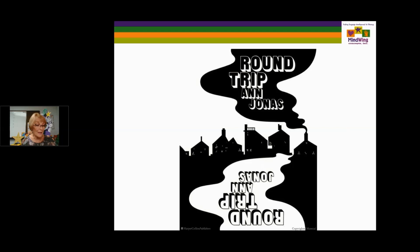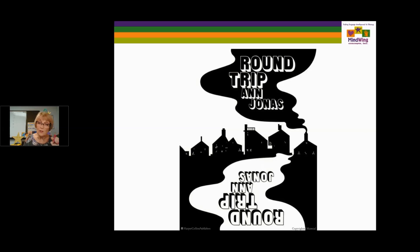Round Trip by Ann Jonas — the book is wonderful because of the illustrations. One side up, and when you get to the end of that section, you turn the book around and read another series of actions. It's from the country to the city and back, with various scenes along the way. When you turn it upside down, the scene on the way out — which may have been a restaurant — becomes a movie theater on the way back. With older kids, I've used this as a motivator to come up with kickoffs.